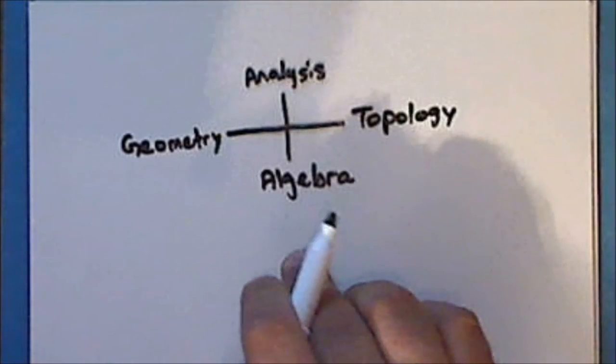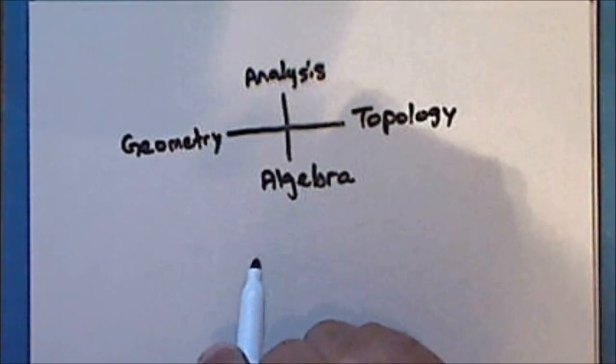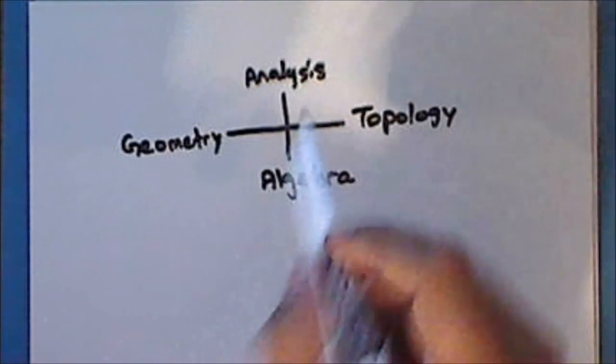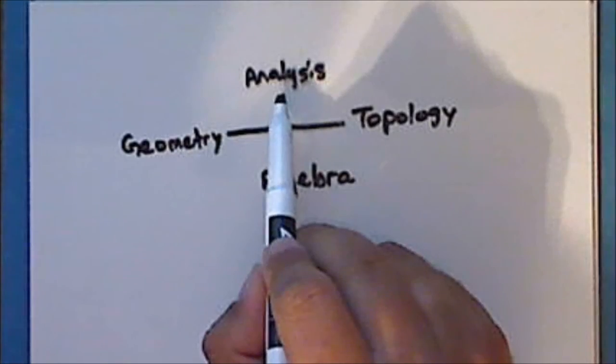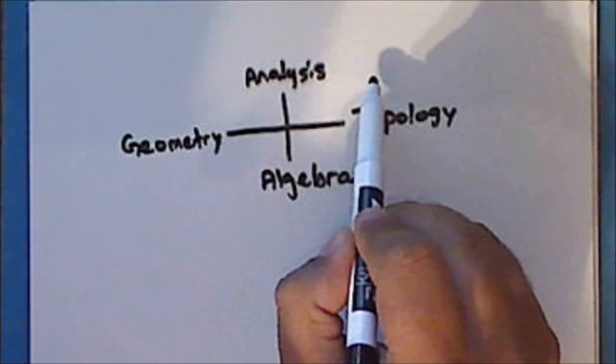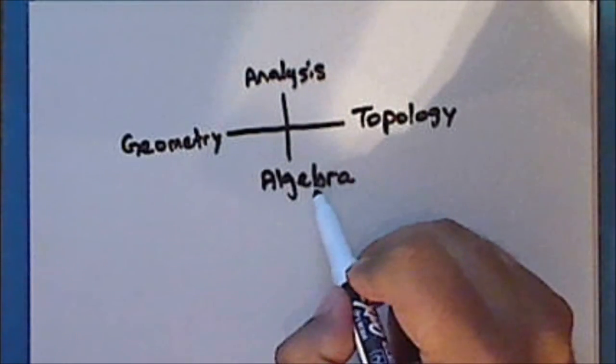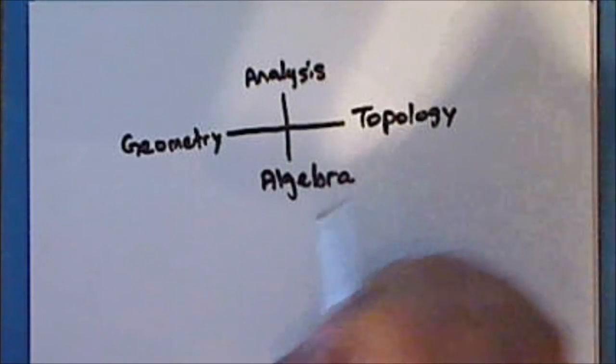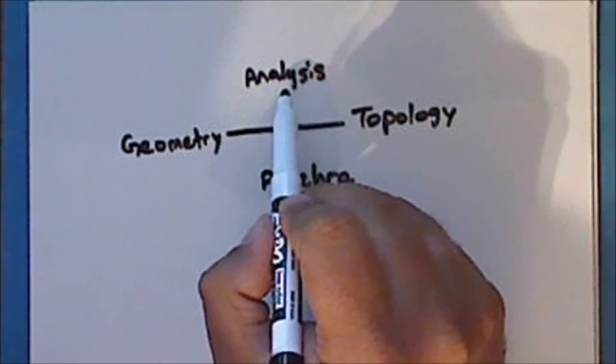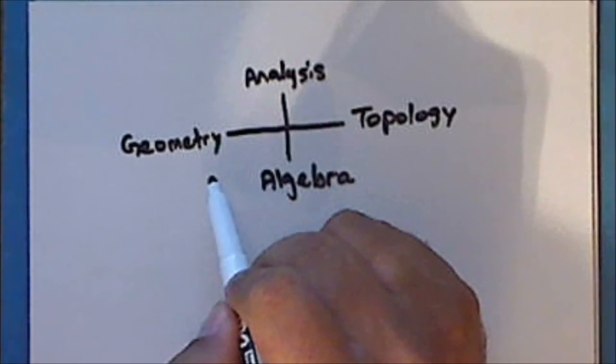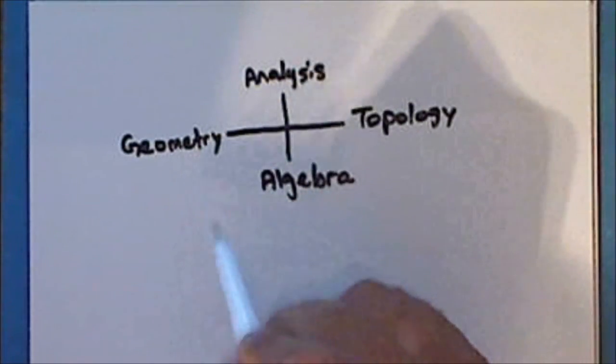Now, the combination or confluence of these four main branches of mathematics yields some very interesting sub-disciplines. For example, using the tools of analysis to study topological spaces is known as differential topology. Using the tools of algebra to study topological spaces is known as algebraic topology. Using the tools of analysis to study geometry is known as differential geometry. And using the tools of algebra to study geometry is known as algebraic geometry.